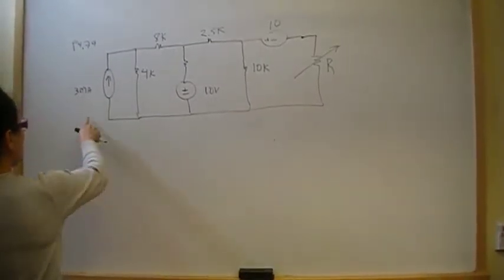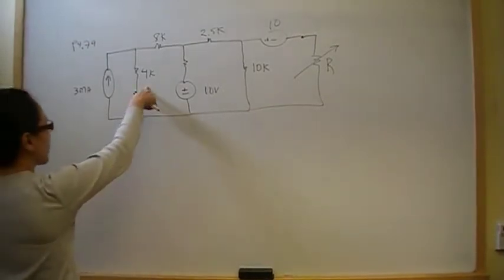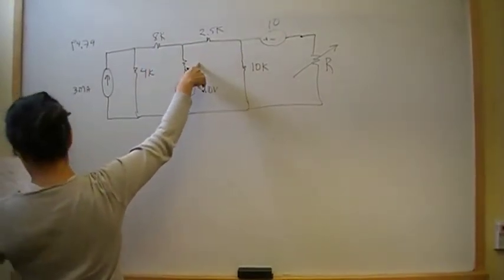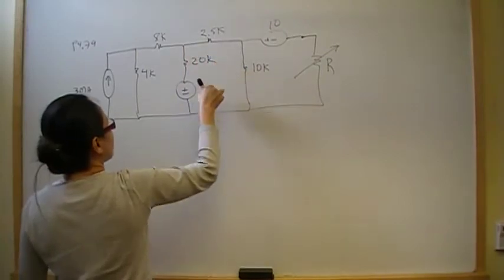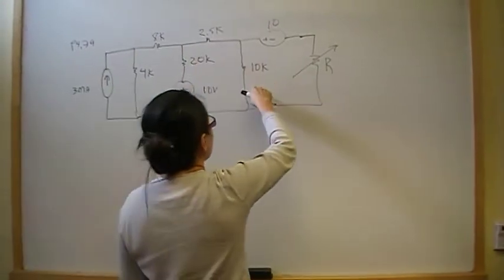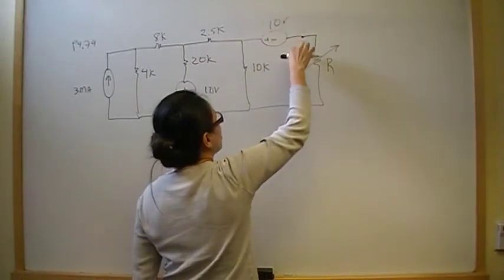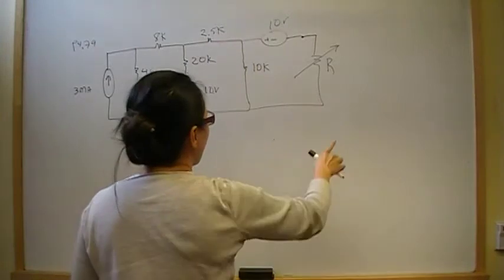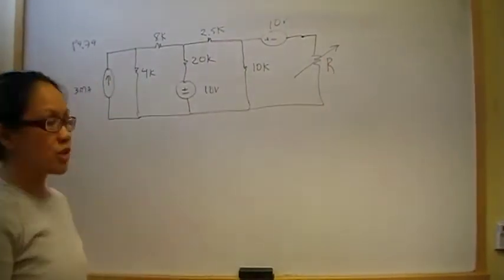We have a circuit with a 3 milliamp independent current source connected in parallel with a 4 kilohm resistor. We also have 8 kilohms, 20k, 10 volts, 2.5k, 10k, and 10 volts with a voltage drop going from here to here. All of that is connected to a varistor, which is our load.